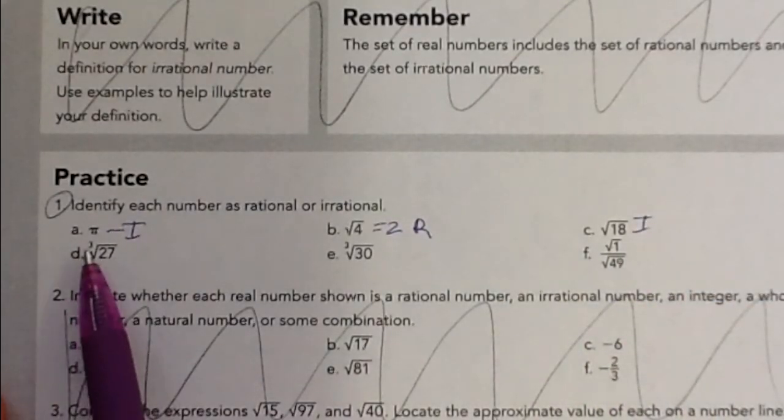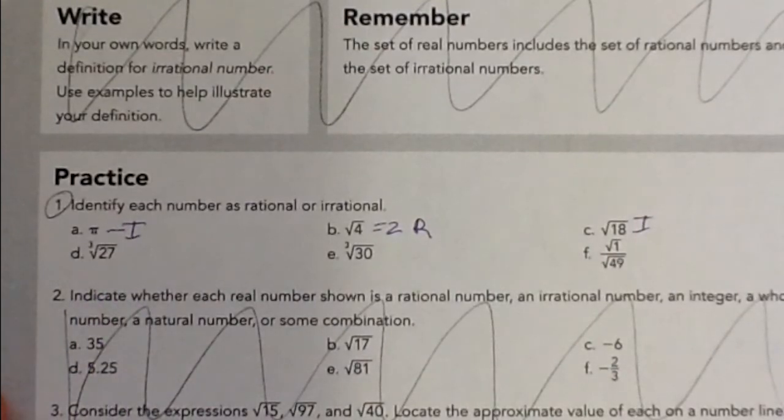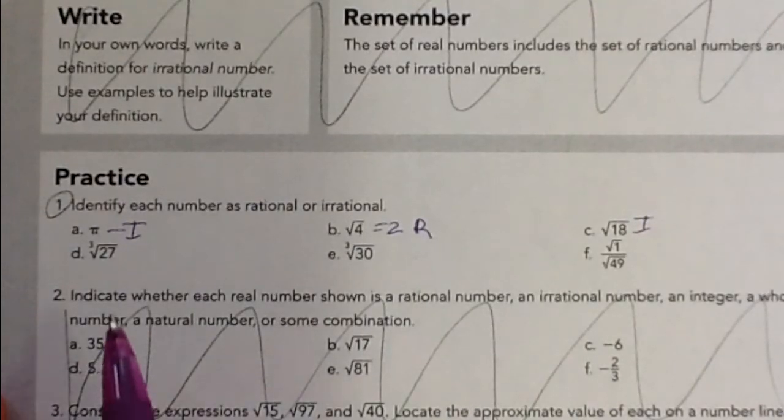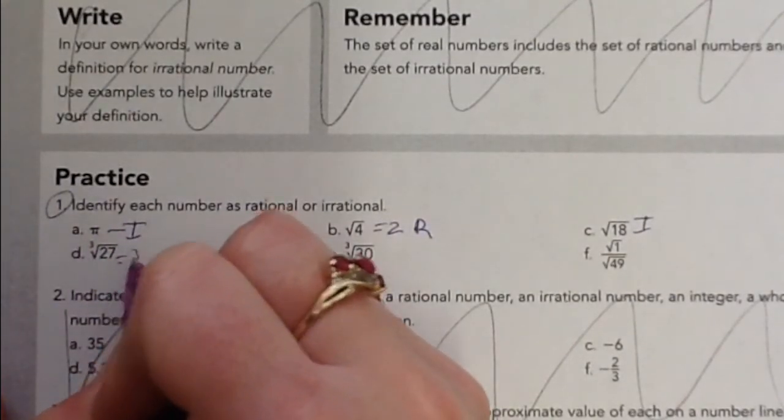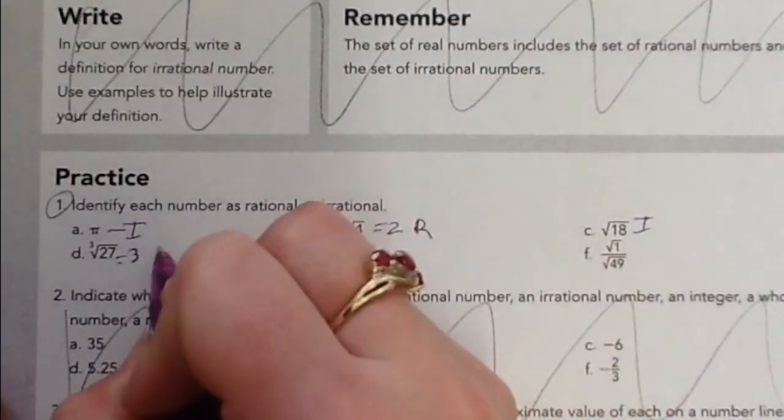D, the cube root of 27, you can use a calculator on this if you need to, but it's also good just to start learning what your perfect cubes are, like the low-level ones. This one's a common one you see. A number times itself 3 times, that gets you to 27, is 3. So this is just 3, and 3 is a rational number.